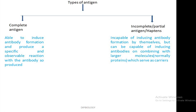There are different types of antigens, which can be divided into two parts: complete antigens and incomplete or partial antigens, also called haptens. Complete antigens are able to induce antibody formation and produce a specific and observable reaction with the antibody so produced. On the other hand, incomplete or partial antigens or haptens are incapable of inducing antibody formation by themselves but are capable of inducing antibody production when combined with larger molecules, normally proteins, which serve as a carrier.